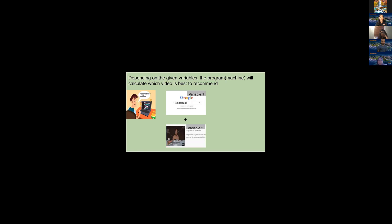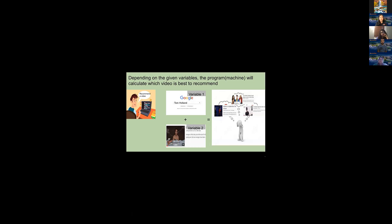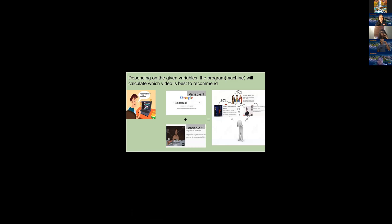Here's another example: we have Tom Holland, who played Spider-Man — that's our first variable. Our second variable is Jimmy Kimmel. As this goes on, it's going to do the math again, check on viewer clicks and how long they actually stayed on the videos, and start giving a percentage on what it thinks you're going to like more versus less. Depending on which one has the highest probability, it ranks them from first to second — and that's how the video playlist on your right-hand side when you're watching YouTube is actually made.